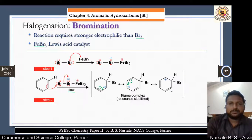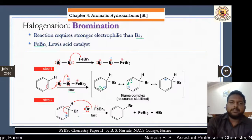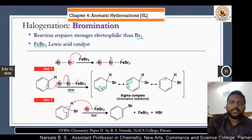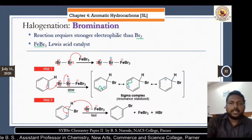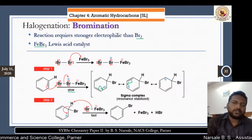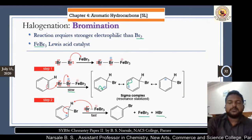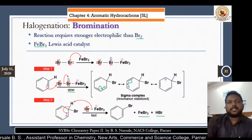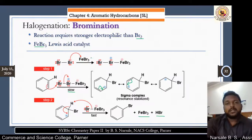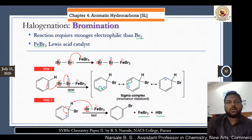In step three, there is elimination of a proton to stabilize the structure and to regain aromaticity. The FeBr4- which is eliminated takes the hydrogen and the proton is removed. It gives formation of FeBr3, meaning the Lewis catalyst is regenerated and HBr is formed. The catalyst role is very important — it increases the rate of reaction or facilitates the reaction. FeBr3 is added and it is regenerated at the end of the reaction.